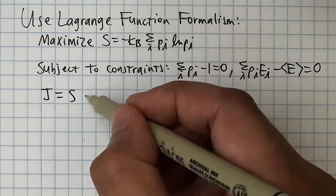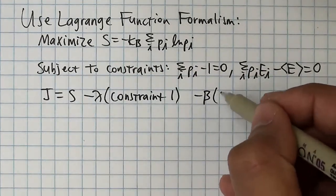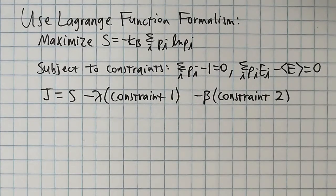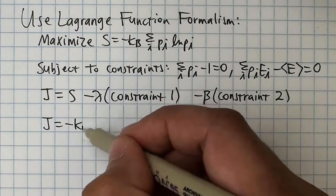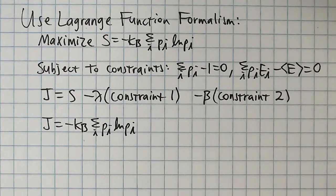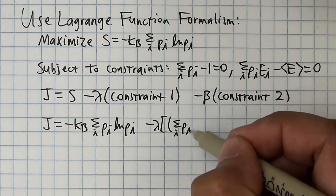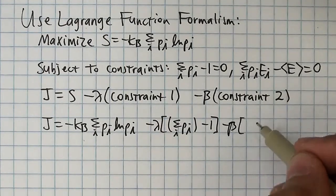We start by defining the Lagrange function, which is the thing you're trying to maximize minus the Lagrange multiplier, lambda or beta in our case, times the constraint equation. After filling this in, we're ready to do some derivatives.